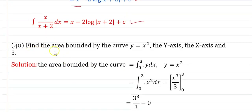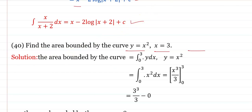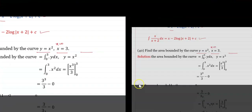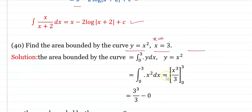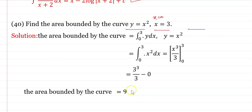Find the area bounded by the curve y = x² from x = 0 to x = 3. Area = ∫₀³ x² dx = [x³/3]₀³ = 27/3 − 0 = 9 square units.